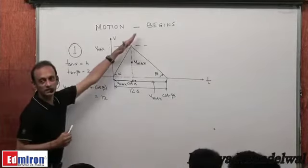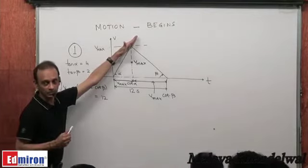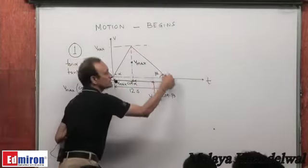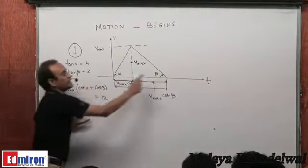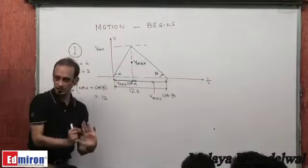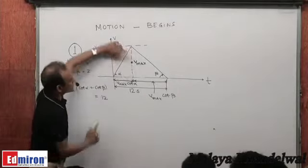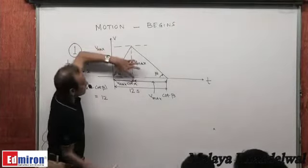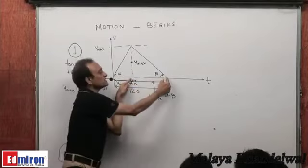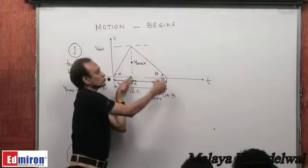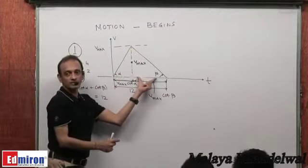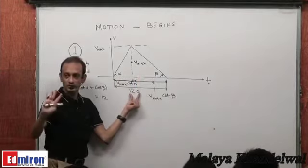To clarify: the V versus time graph is linear with tan α = 4 during acceleration, then velocity decreases with retardation at 2 m/s² so tan β = 2, and total time is 12 seconds. The vertical height is Vmax; this horizontal length divided by Vmax is cot α giving Vmax·cot α, and this length divided by Vmax is cot β giving Vmax·cot β. Together they add up to 12 seconds.